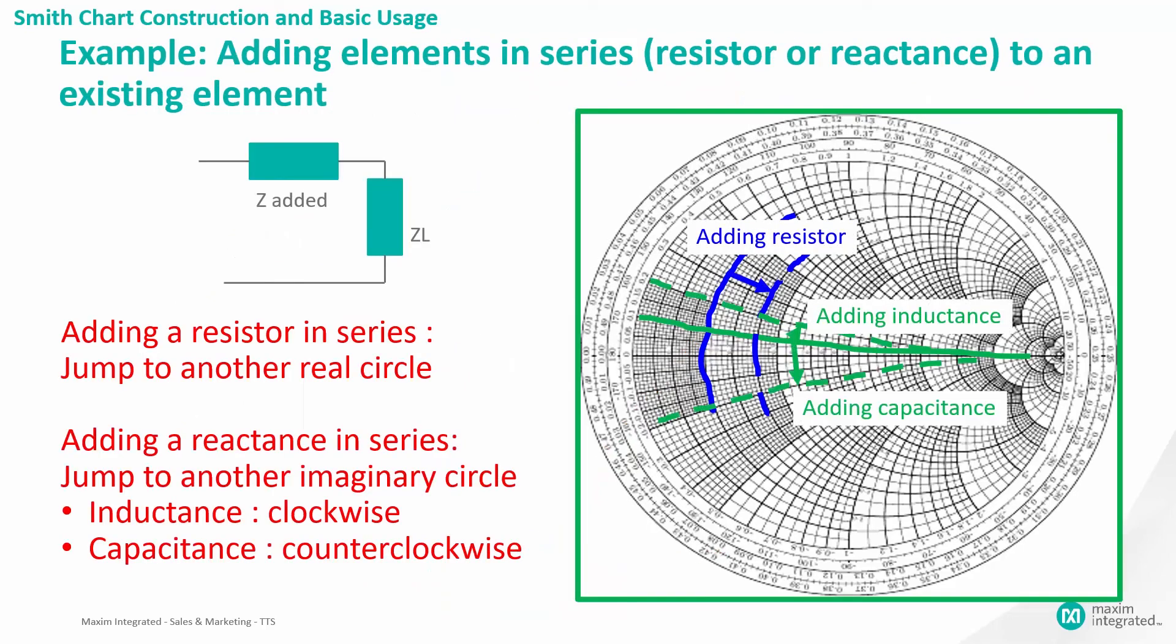Next, let's look at how to add elements to an existing impedance by using the Smith chart. If you add a pure resistor, move along the constant reactant circle, as shown in blue. If you add a pure reactant, move along the constant resistive circle, as shown in green. For an inductor, turn clockwise. For a capacitor, turn counterclockwise.